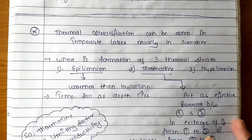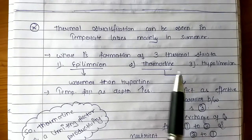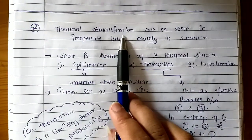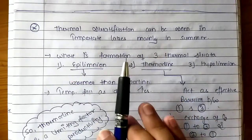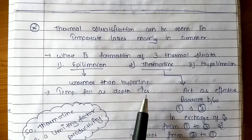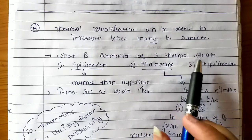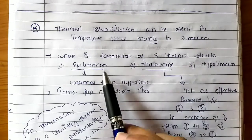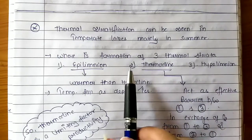In the case of temperate lakes, we can see thermal stratification. In summer, the surface water is very warm while the deep water is cold. So we can observe three strata: Epilimnion, Thermocline, and Hypolimnion in temperate lakes.